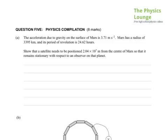Okay, so the 2012 Scholarship Physics paper, we're up to question 5, a physics compilation. Part A: The acceleration due to gravity on the surface of Mars is 3.71 metres per second squared. Mars has a radius of 3,395 kilometres. Its period of revolution is a little over 24 hours. Show that the satellite needs to be positioned that far from the centre of Mars so that it remains stationary with respect to an observer on the planet.